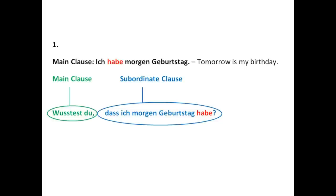This is a main clause: 'Ich habe morgen Geburtstag' — which means 'tomorrow is my birthday'. We have the verb 'habe', which means 'have', and it's in the second position. Remember that in the main clause, the verb is always in the second position. As soon as we add a subordinate clause, we need to put the verb in a different position — in the subordinate clause, the verb takes the last position. So this is what it looks like: 'Wusstest du, dass ich morgen Geburtstag habe?' — 'Did you know that tomorrow is my birthday?' The verb 'habe' travels to the end of the sentence.